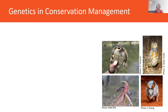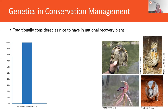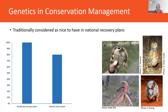When we look at genetics and conservation management in Australia, things are improving, but when we first started the Threatened Species Initiative and investigated what was happening in 2018 and 2019, looking at the 200 national vertebrate recovery plans, genetics was only considered a nice-to-have. Of the 200 plans, more than 80% had some form of genetic action for recovery, however less than 15% were actually using genetic data.